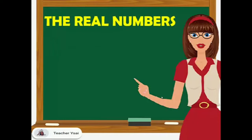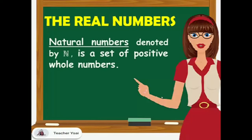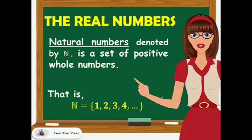The real numbers. Let's start with natural numbers, denoted by the letter-like symbol N, which is a set of positive whole numbers. That is, it is written in this form: N equals the set of 1, 2, 3, 4, up to the positive infinity.